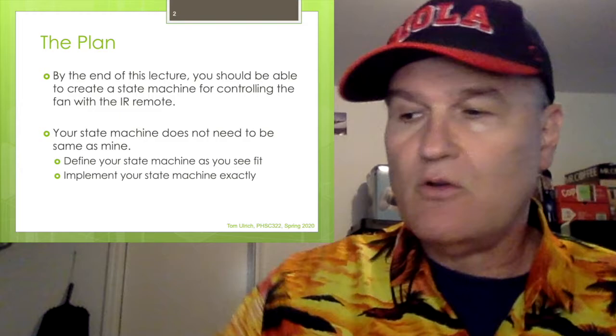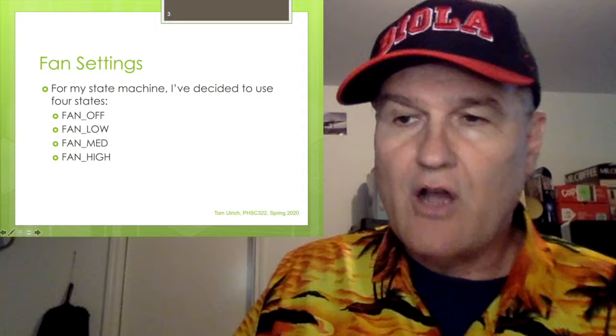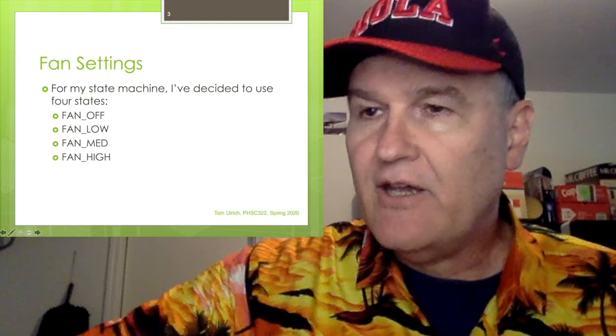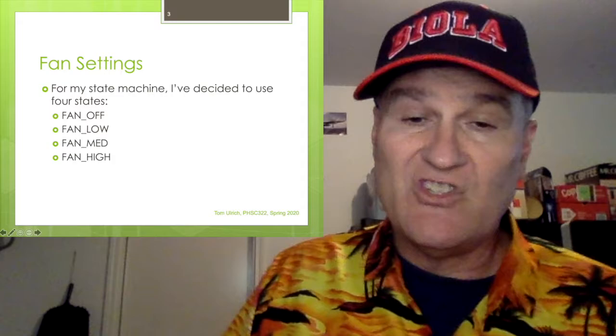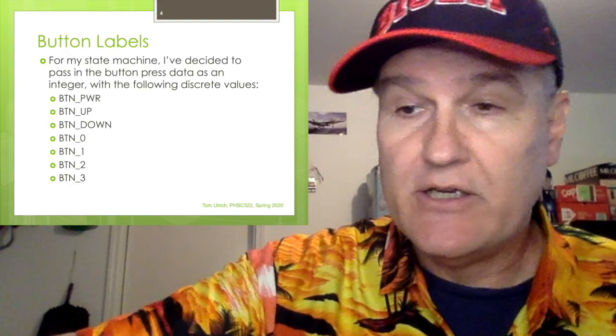All right, so first of all, let's take a look at some of the constants I create. So I'm thinking there ought to be four states, so I'm going to use a state called off, a state called low, a state called medium, and a state called high. And along with this, I specified in the homework that we need to use seven buttons, at least seven buttons. So we need to be able to use the power button, the up arrow, the down arrow, the zero, one, two, and three, and here's how I define those constants.